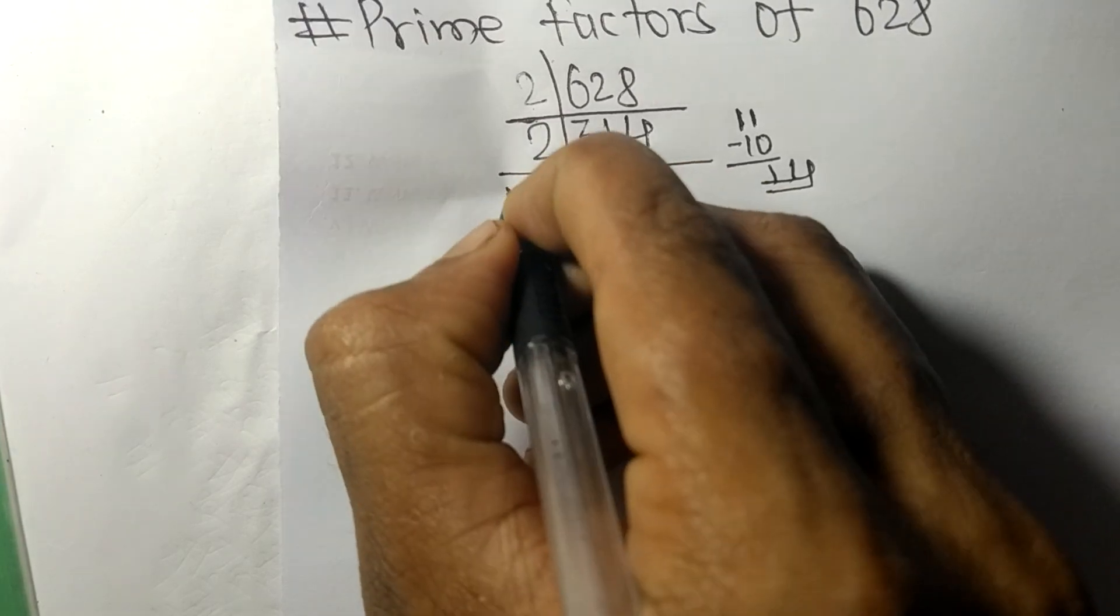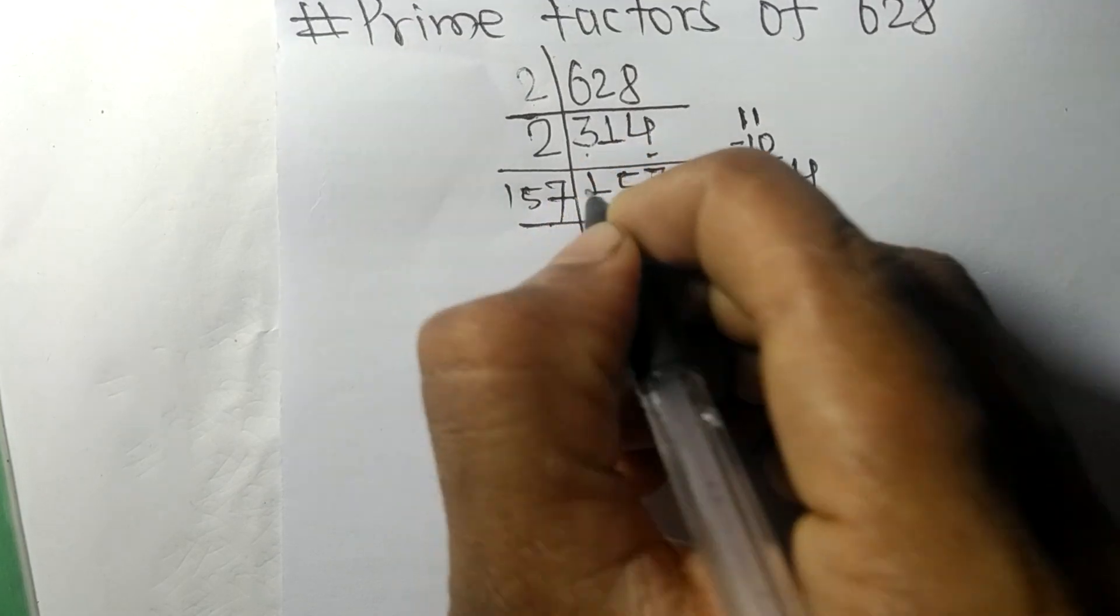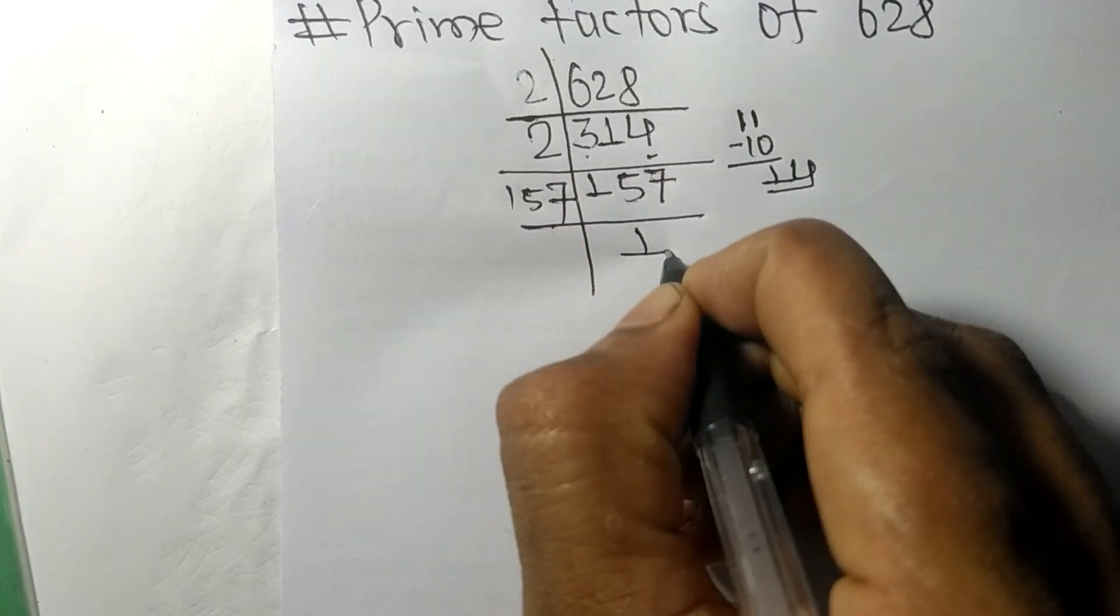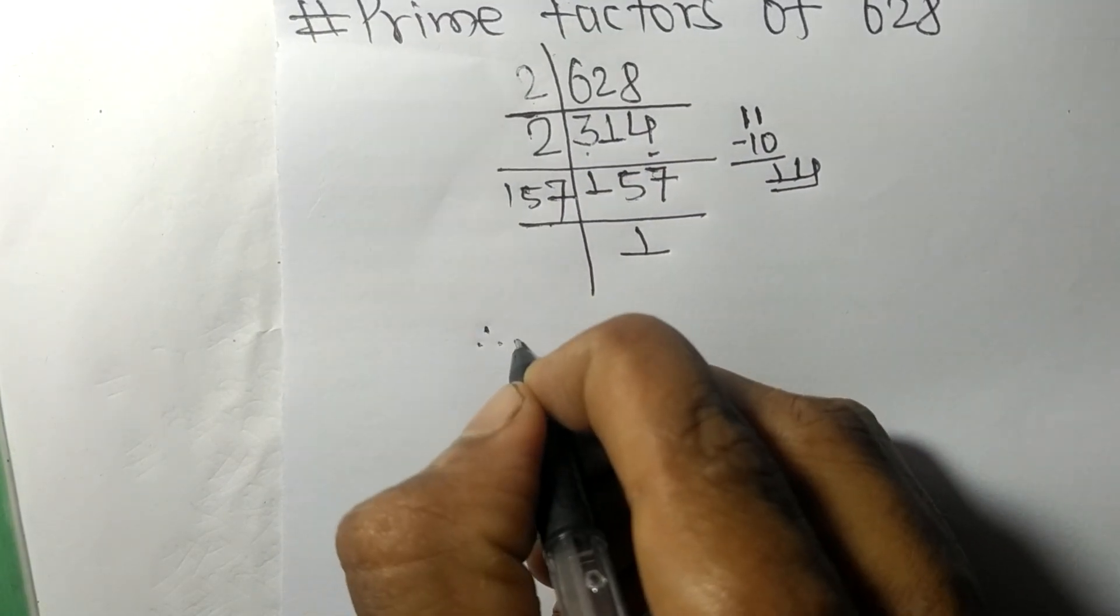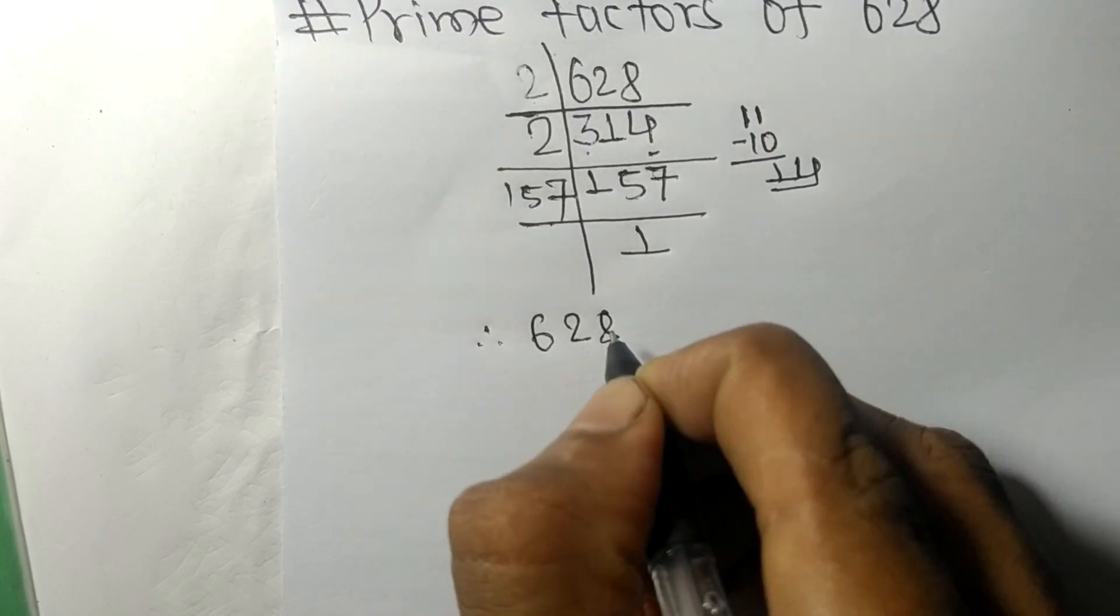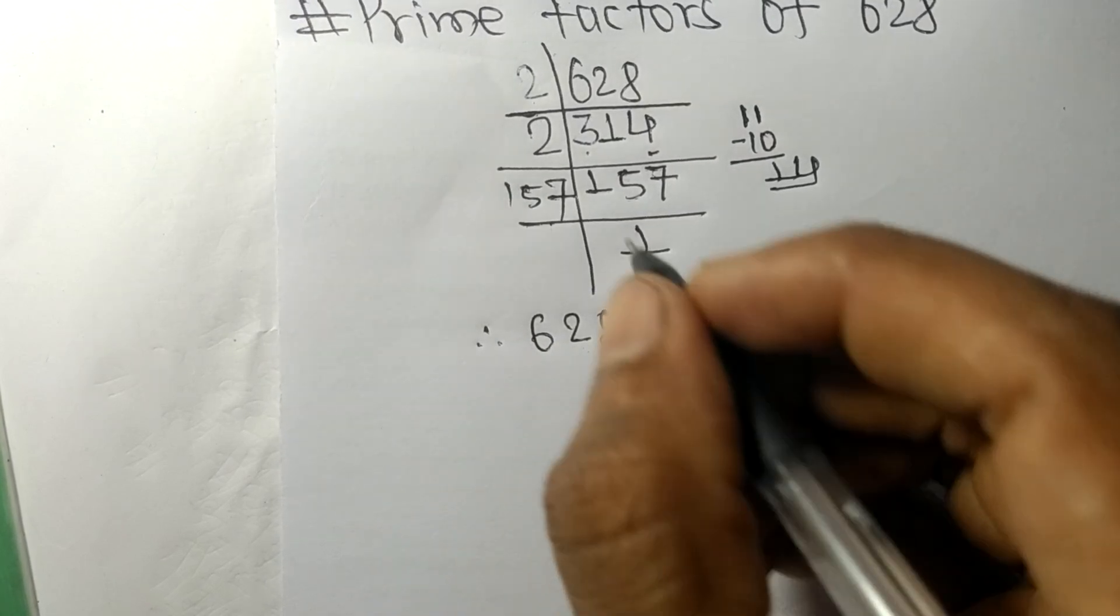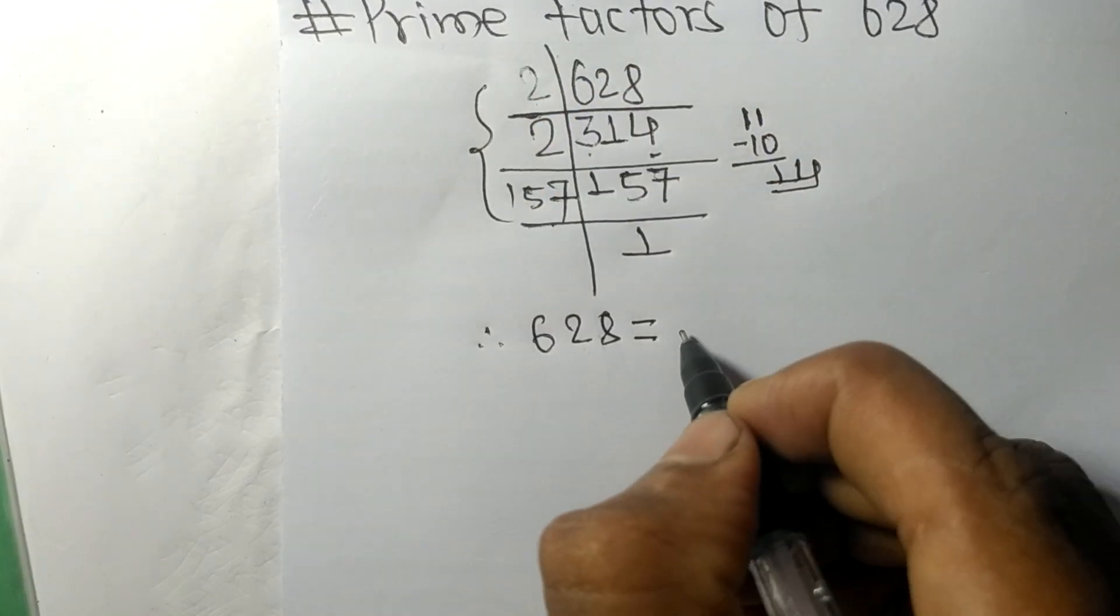It is divisible by 157 itself and we get here 1. Therefore 628 is equal to, from this side we have...